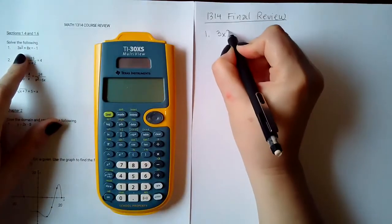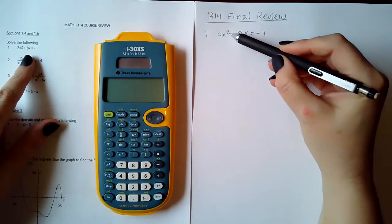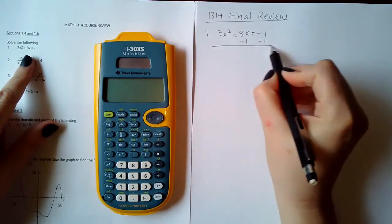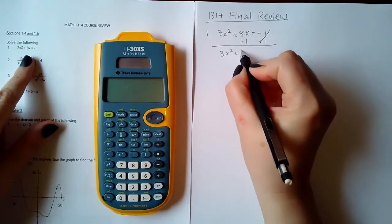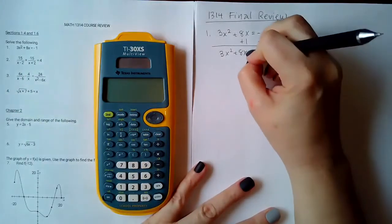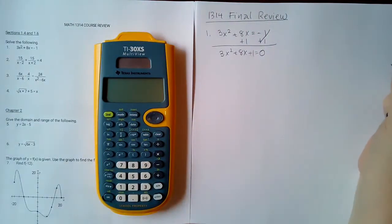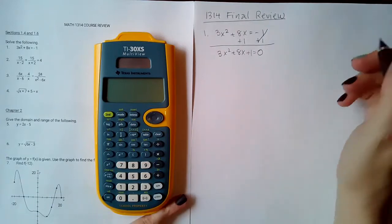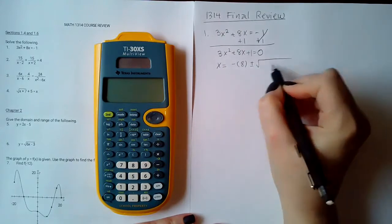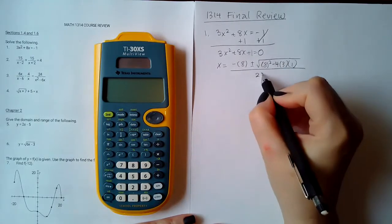For number one we have 3x squared plus 8x equal to negative one. This is a quadratic equation, so in order to solve it I have to set it equal to zero, which means I will have to add one to both sides of this equation. Then I could try to factor it, but if I don't want to go through the whole factoring process, I can use the quadratic formula: negative b plus or minus b squared minus 4ac all over 2a.